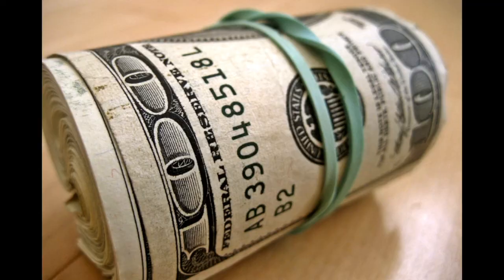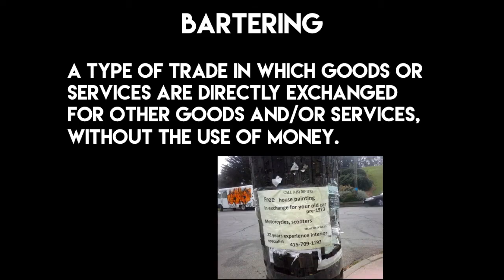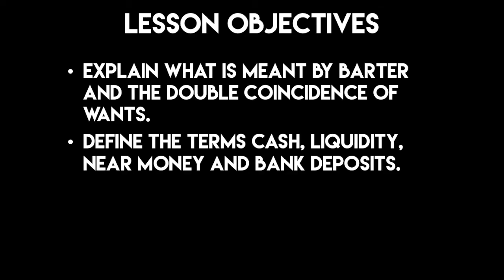If we go back to the beginning and look at our objectives, hopefully by now you understand what is meant by barter, the double coincidence of wants, and you can define cash, liquidity, near money, and bank deposits. With this basic understanding, you should be able to move into an introductory understanding of money and later monetary policy.